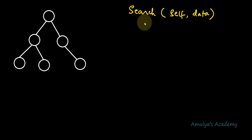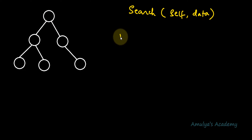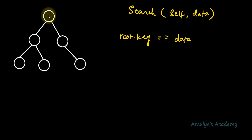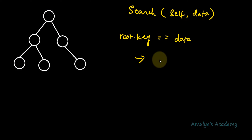While performing the search operation, first we need to compare the data of the given node with the data of the root node. So first you need to check the root node key whether it is equal to the given data. If it is true, that means the given node is present in the tree, so we print the message: 'node is found'.